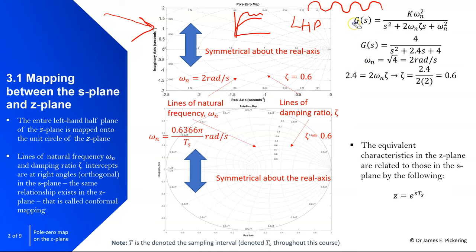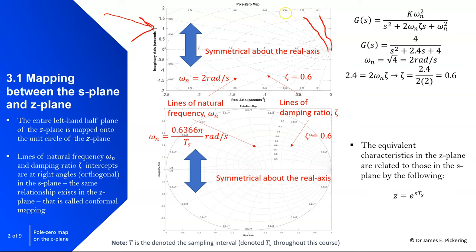The left half of the S-plane consists of lines of damping ratio. You can see these lines going away from the origin of the S-plane — values of 0.1, 0.2, 0.34, 0.46. These are lines of damping ratio, i.e., values of zeta, where zeta is obviously increasing as you move around.